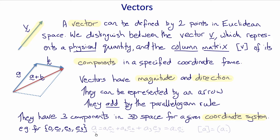the vector a can be written as a equals a1 e1 plus a2 e2 plus a3 e3, or using index notation and the summation convention ai ei.